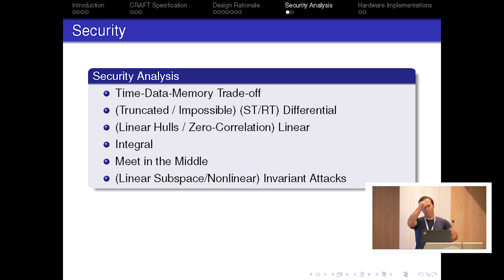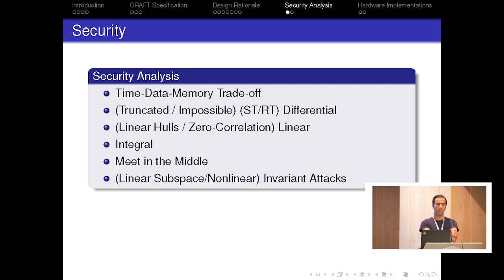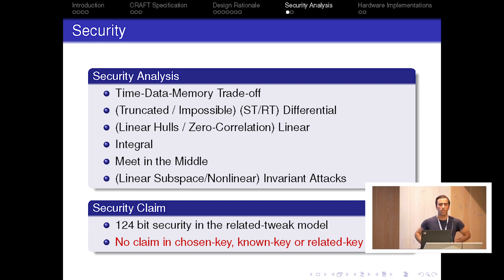When the design was finished, we checked the security provided by our design. We evaluated the security of CRAFT against the attacks that were most dangerous for similar block cipher designs. The security we claim is that CRAFT provides 124-bit security in the related-tweak model. We do not claim anything about the chosen-key, single-key, or related-key models.